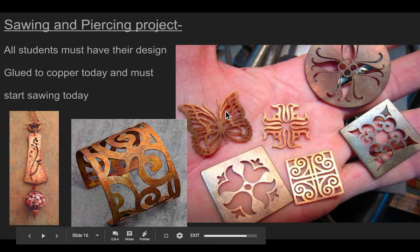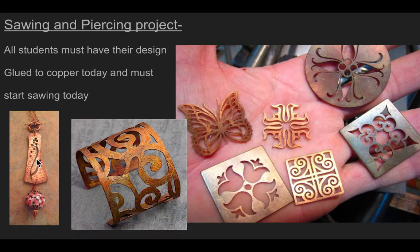Your two choices for metal for this project are going to be copper — this is copper — or nickel, which is going to look like silver but isn't silver. You can make anything you want: a pendant for a necklace, a bracelet, two earrings, or a keychain. Those are some of your top options.